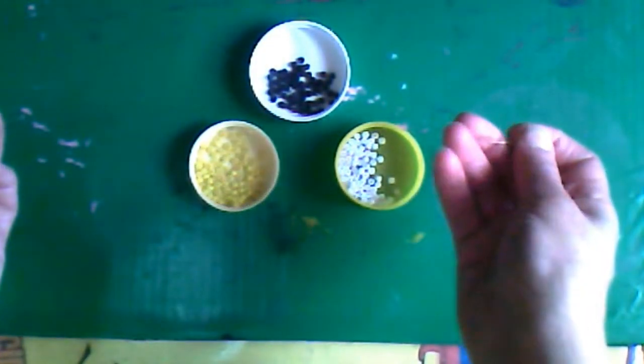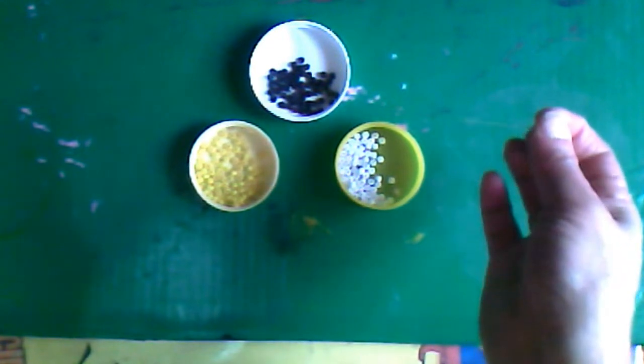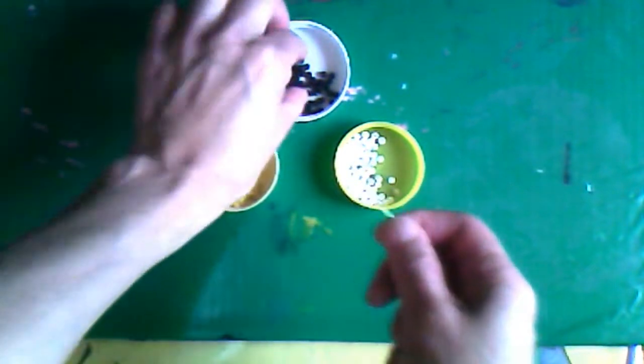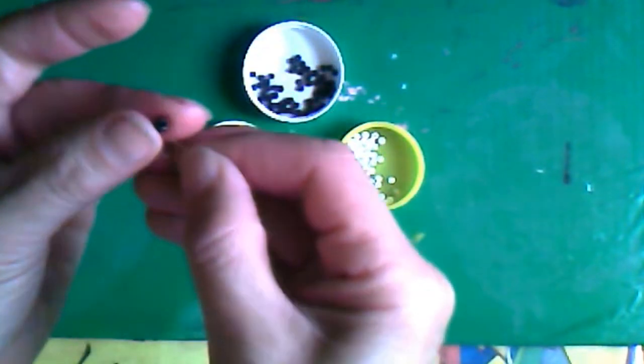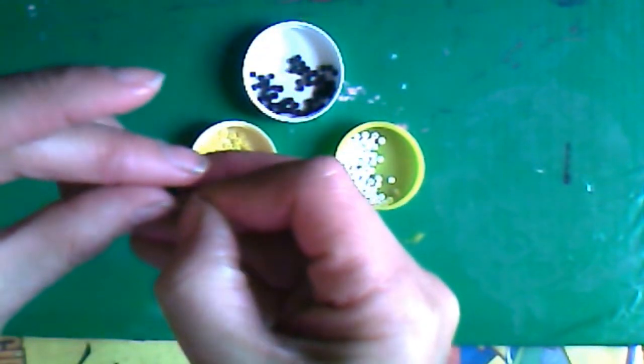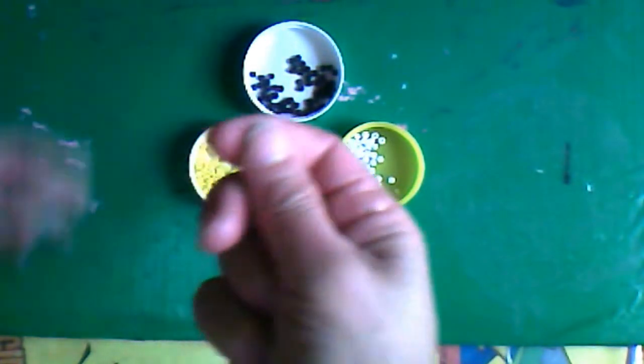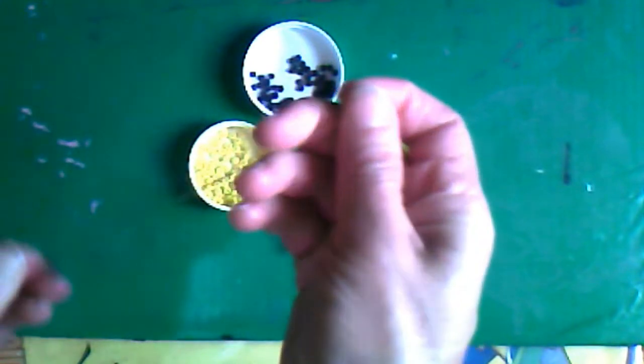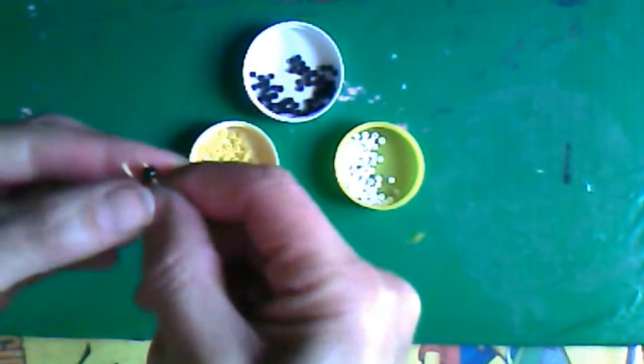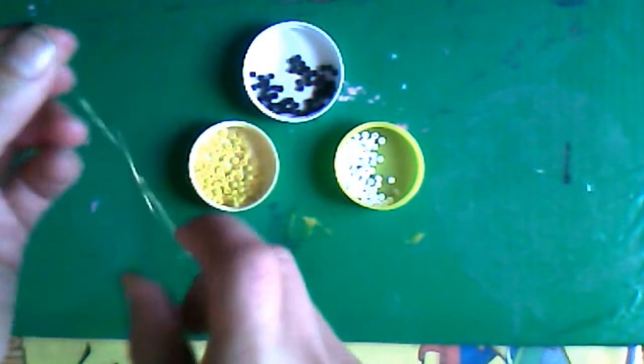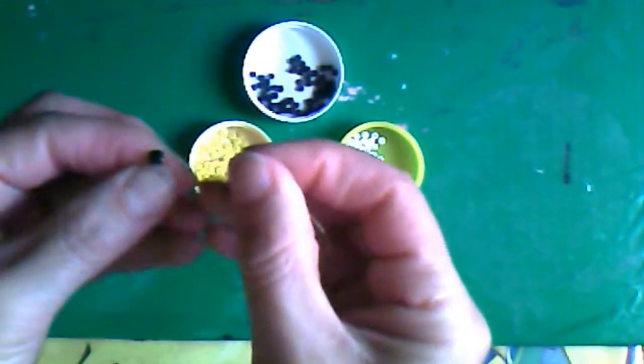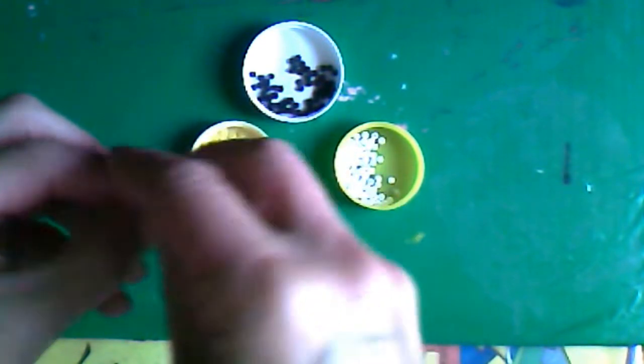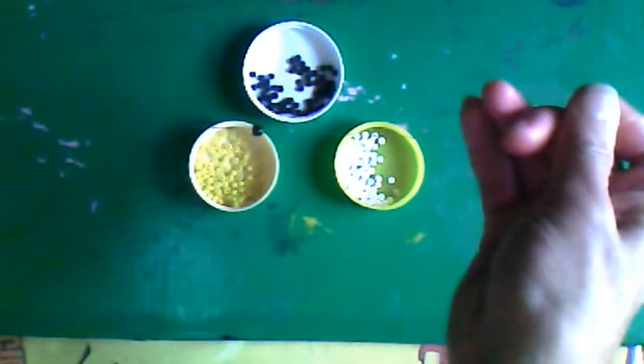Yo aquí corté 25 centímetros de alambre de latón. Lo primero que tengo que hacer es insertar un Shakirón negro. Lo inserto y lo voy a llevar a la mitad de mi alambre. Una vez que lo llevo a la mitad, tomando una punta de mi alambre, lo vuelvo a insertar, regresando, y ya va a quedar aquí.